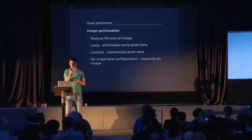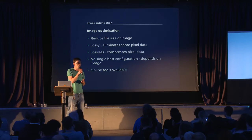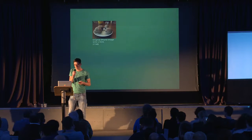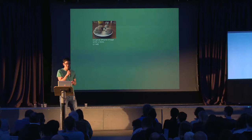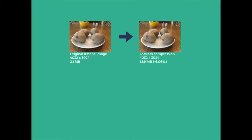There are some online tools available. Here's a quick example. This is a picture of some potatoes I took on my iPhone. The image is 4,000 by 3,000 pixels and 2.1 megabytes. The first thing I did was run it through a lossless compressor — just compressing pixel data, not losing any image quality at all. The iPhone actually does a pretty good job already, because the lossless compressor only saved me 6% of the image size. Next, I ran the same image through a lossy compressor — the quality is slightly less, but there's a bigger saving: I saved 15% in this case.